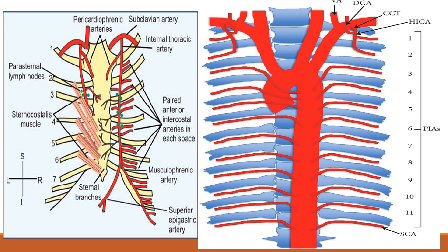This origin is also from the high-pressure segment, because the coarct occurs only after all three branches of the aortic arch arise. So the first two posterior intercostal arteries arise before the coarct segment and are therefore at the same high pressure as the anterior intercostal arteries.